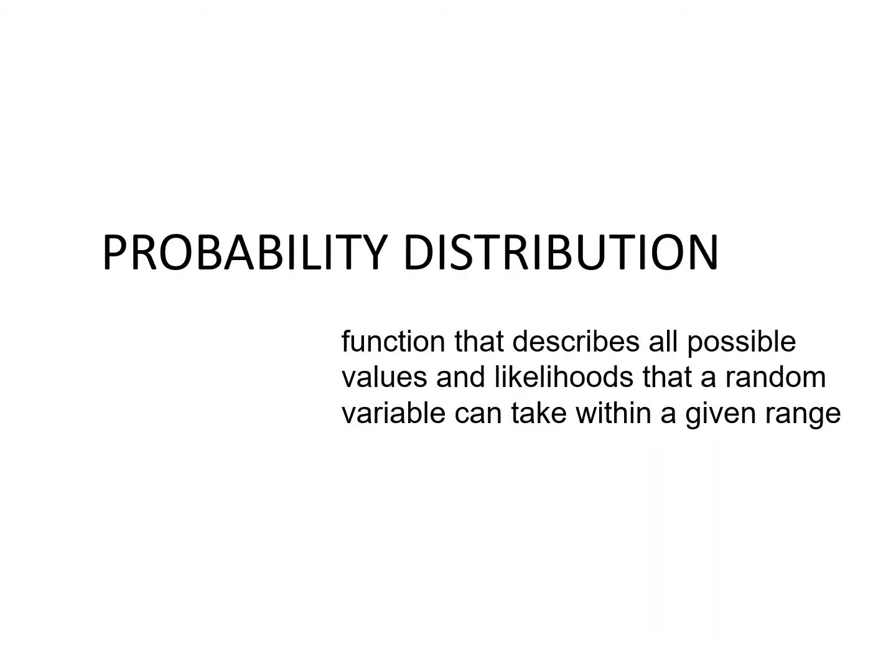Now that we've reviewed distributions and random variables, we can move on to probability distributions. A probability distribution is a function that describes all possible values and likelihoods that a random variable can take within a given range. When annotated, it is written as P(x), where P(x) is equal to x.